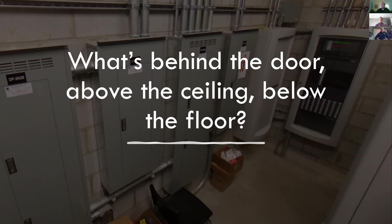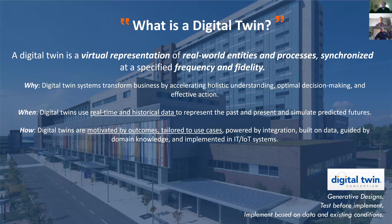The IAHSS annual crime survey gives us statistical data points showing where areas of service in the hospital create the most challenges. For example, the emergency department and behavioral health department are two areas that consistently present security and safety challenges. Visualization helps us understand how to protect those particular areas and devise policies and procedures to keep patients and staff safe. Security and safety are there to support the mission of the healthcare organization.